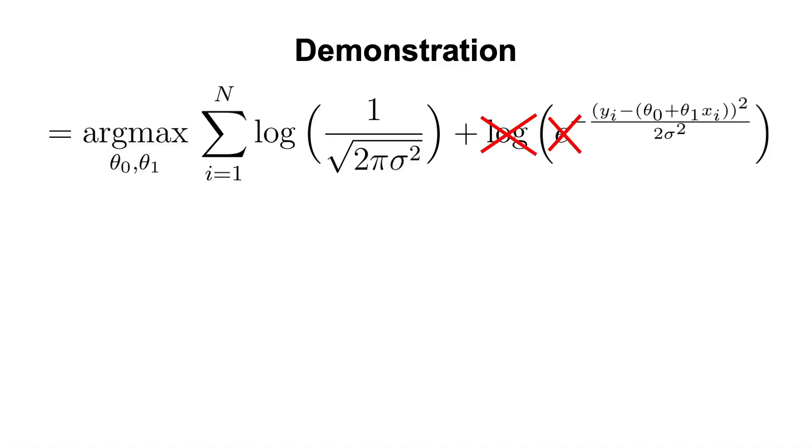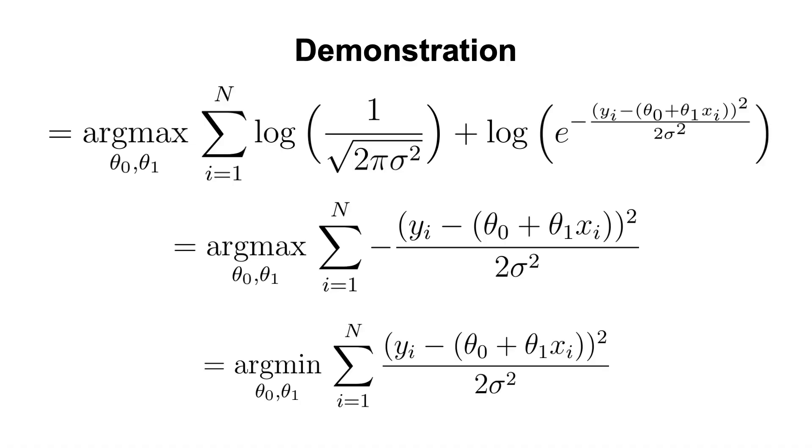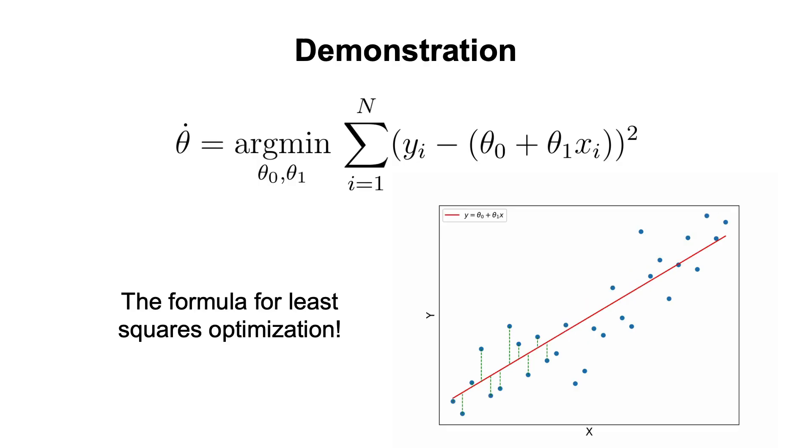Now, we can remove the exponential function, since we are taking the logarithm, and we can also notice that the first term doesn't depend on the parameters theta0 or theta1, so we can just remove it. And we get the following equation. Finally, finding the maximum of the negative of a function is equivalent to finding the minimum of that function. And if we remove the denominator, which doesn't depend on theta0 or theta1, we get the following,